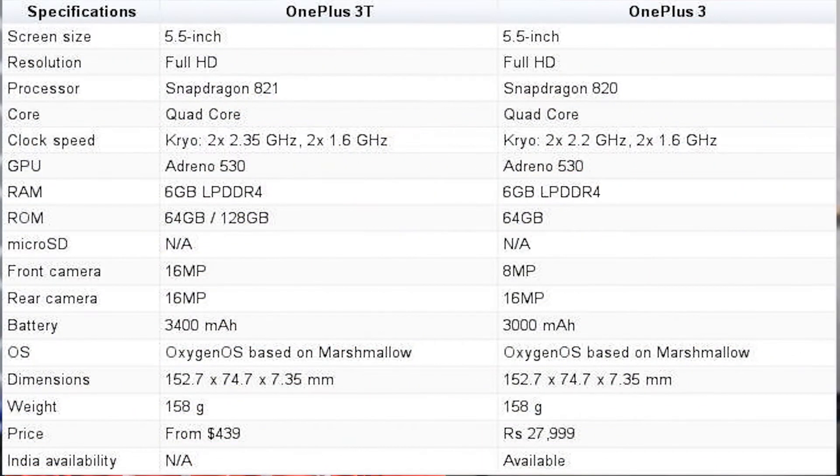For storage, OnePlus 3T comes in two variants: a 64 GB variant and a 128 GB variant. Dash charging is supported on both OnePlus 3 and OnePlus 3T, as OnePlus is giving a new type of charging system called Dash Charger on both phones.